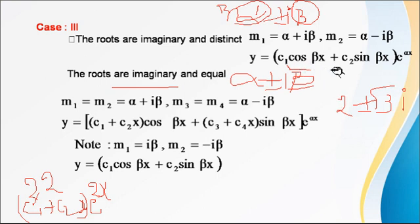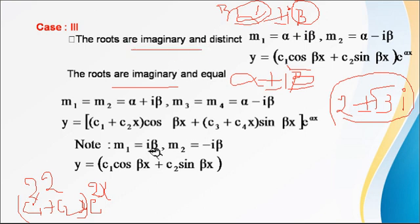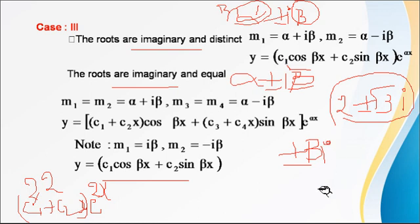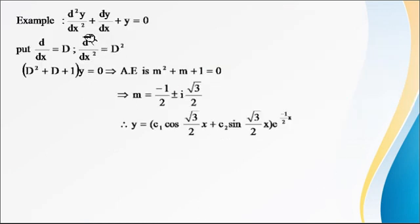Continuing the example with roots 2 plus or minus root 3 i: the CF is (c1 cos(root 3 x) + c2 sin(root 3 x)) e^(2x). If the real part alpha is zero, meaning the roots are plus or minus i beta, then e^(alpha x) = e^0 = 1, so the CF simplifies to just c1 cos(beta x) + c2 sin(beta x).